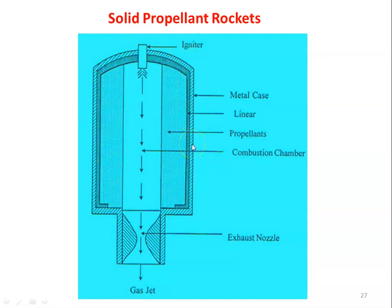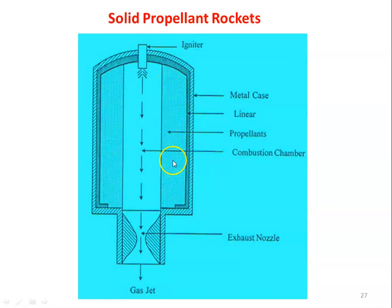The lining material will prevent the reaction of the propellant with the metal wall. In the solid propellant, the fuel and oxidizer are mixed together, powdered by means of a grinding process, mixed in the proper proportion for efficient combustion, and packed inside the cylinder in a particular shape. There are three processes involved: grinding, mixing, and packing. Using the igniter, we initiate the combustion.